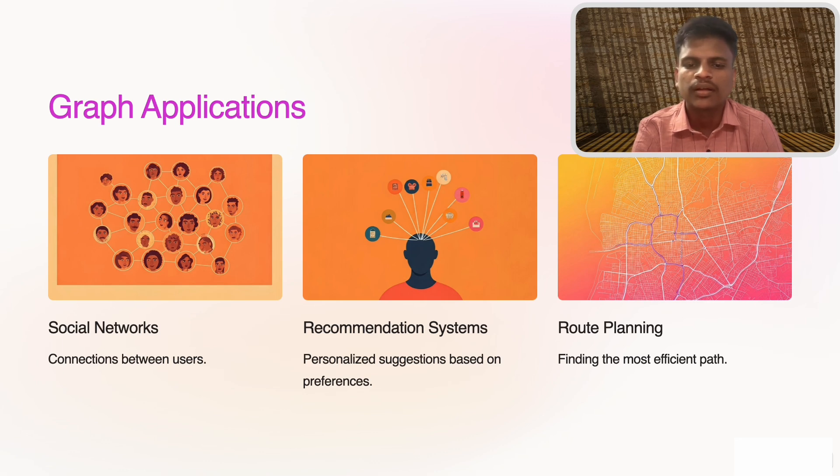Route planning: graphs are crucial for mapping and navigation systems like Google Maps, which use graphs to calculate the shortest route between two points. Each of these examples shows the real-world power of graphs for representing complex, interconnected data.